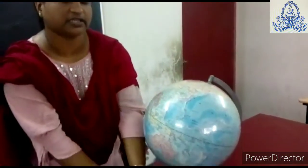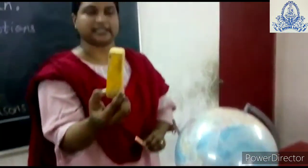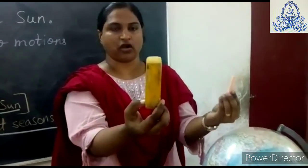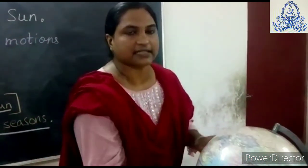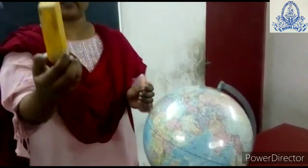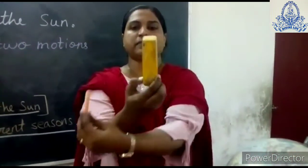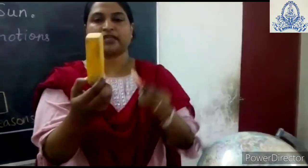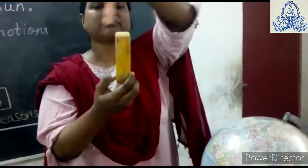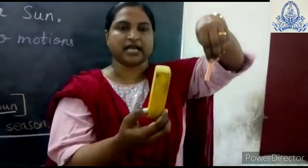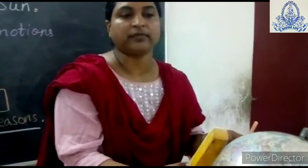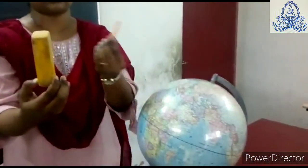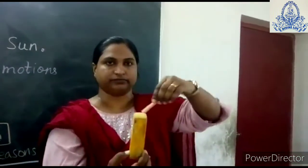If we talk about revolution, consider this duster as the sun and this chalk as the Earth. Rotation means the chalk spinning on itself. Revolution means the chalk circling around the duster — circling around the sun — that is called revolution. Both motions happen simultaneously: the Earth is rotating and revolving at the same time.